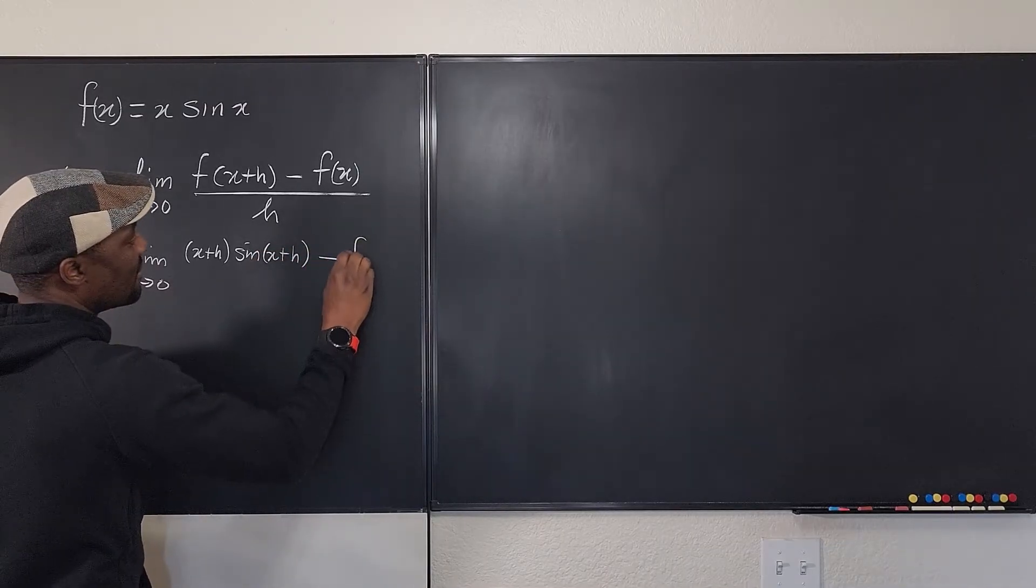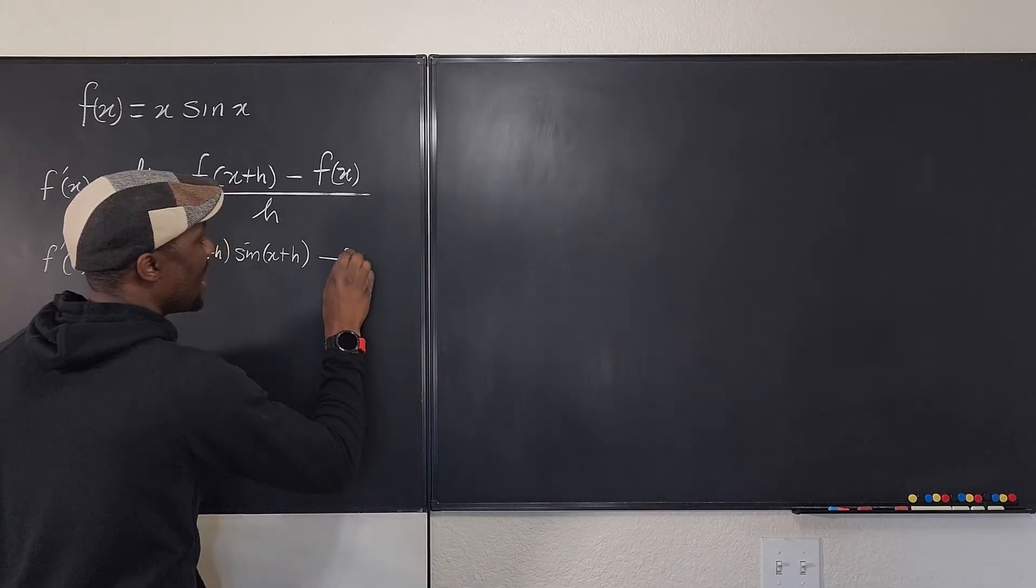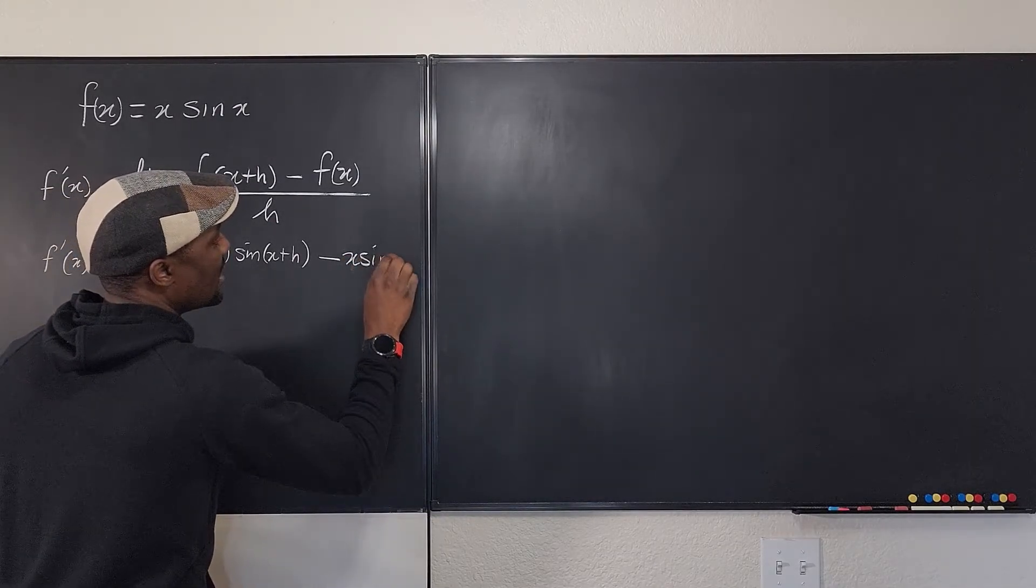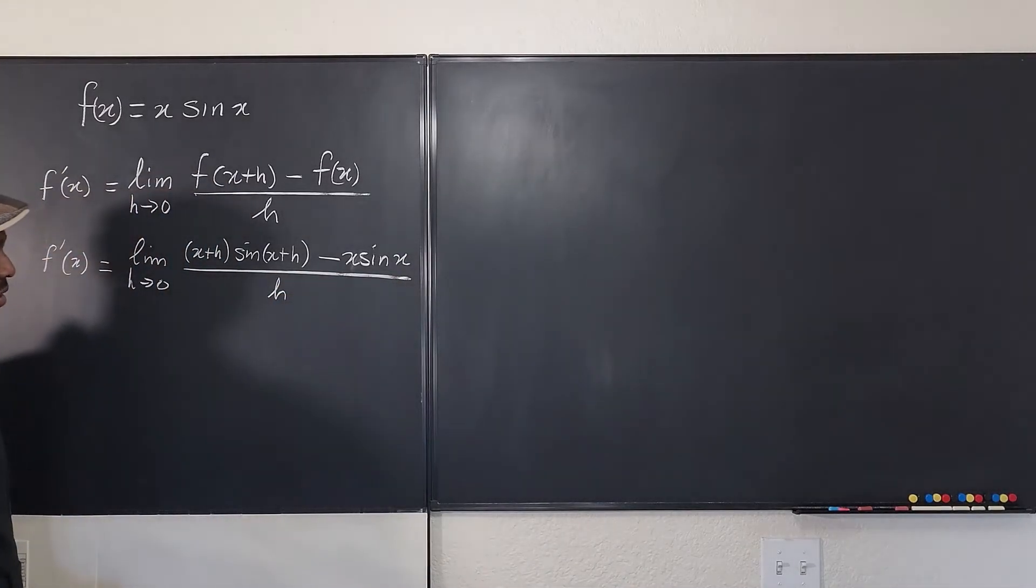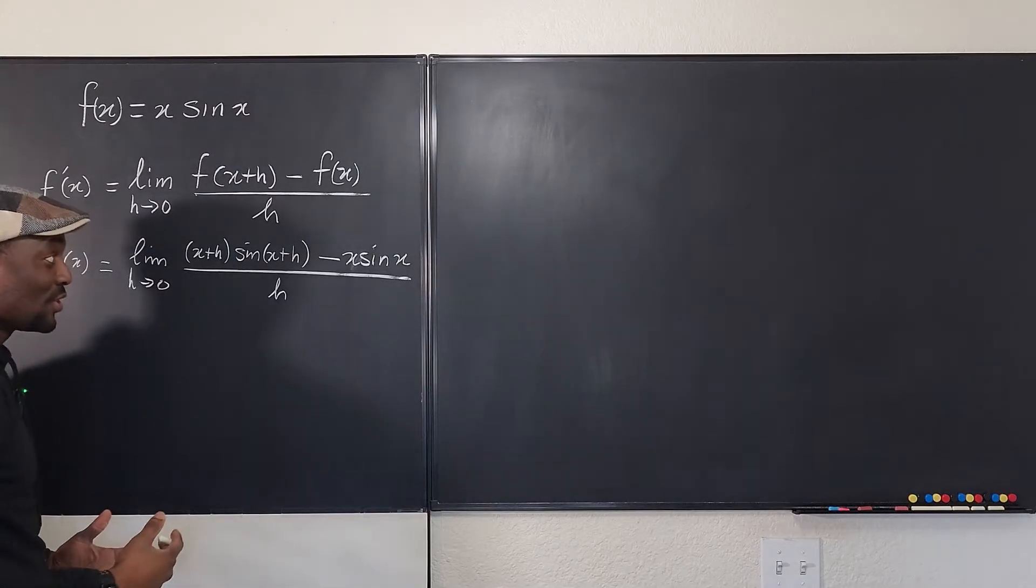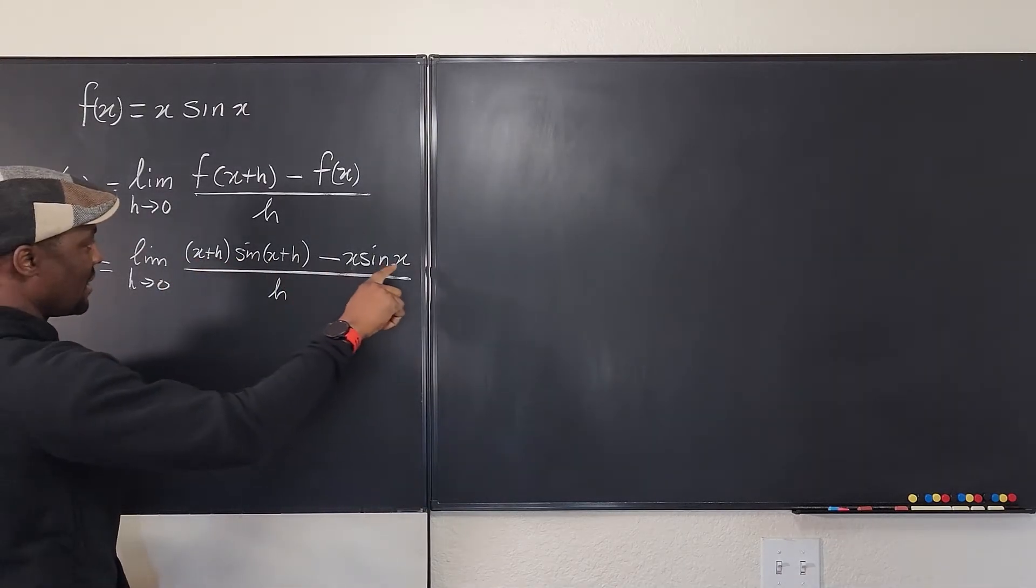Minus f of x which is just x sin x. Let's write x sin x divided by h. Now what's left is just simplification. I'm going to distribute this actually. So let's rewrite this out.